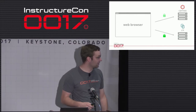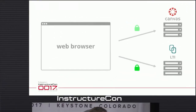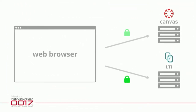How LTI works: as a user, you authenticate with Canvas. Canvas says it knows who you are. You request a resource that is an LTI resource, and Canvas gives your browser the information it needs to authenticate and interact with that third-party resource.